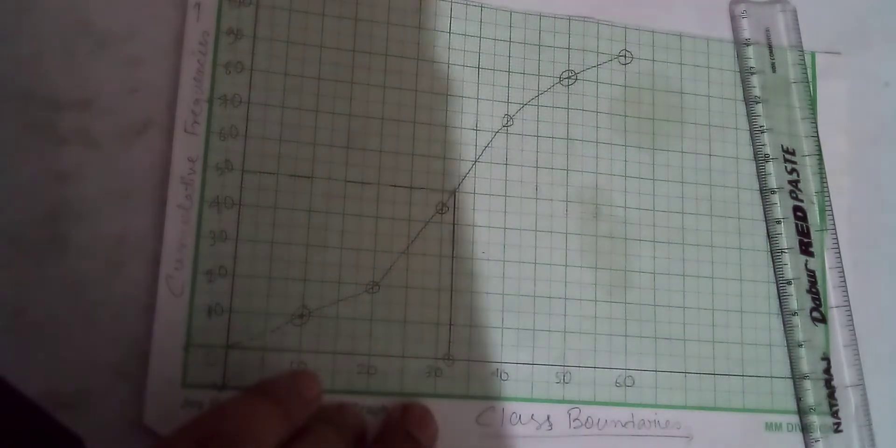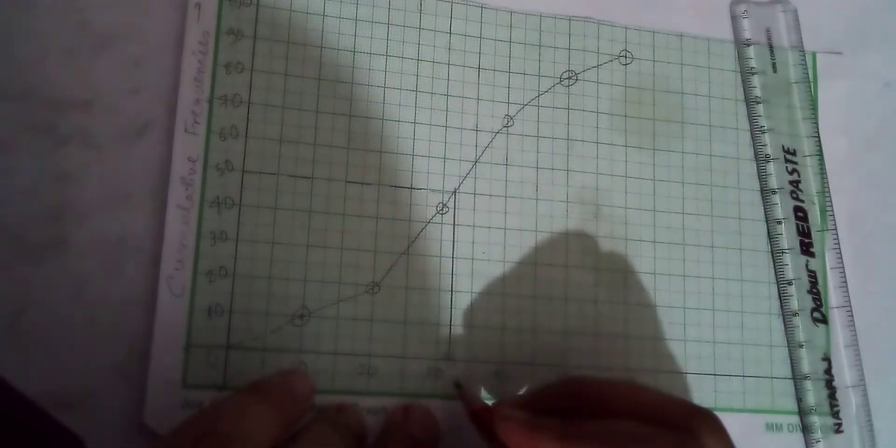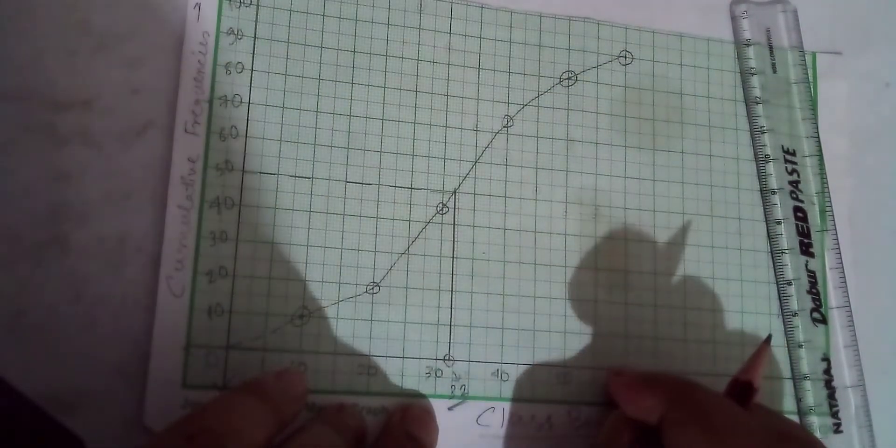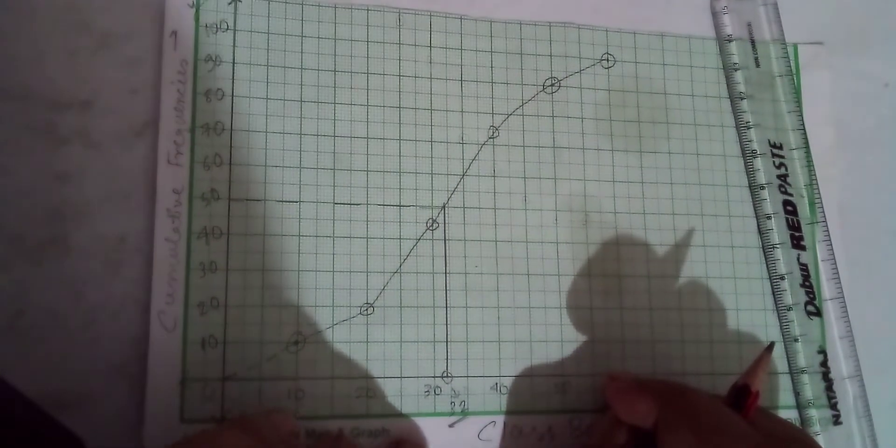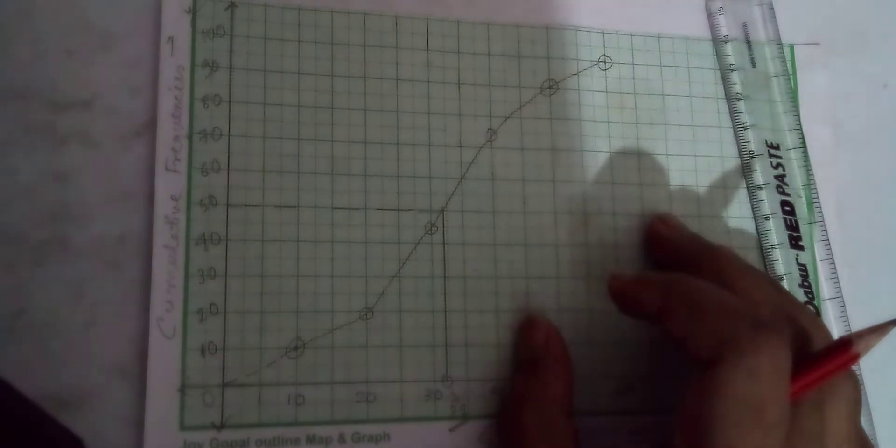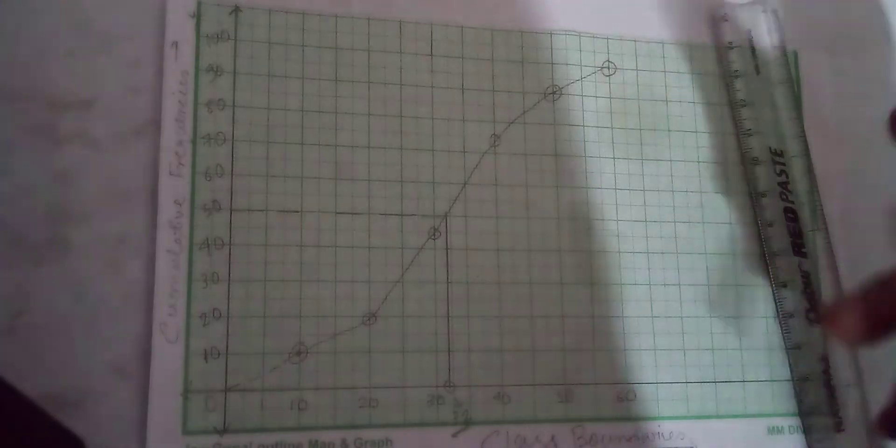The point where this second perpendicular meets the x-axis is the median. From the graph, the median is approximately 32 or 33.